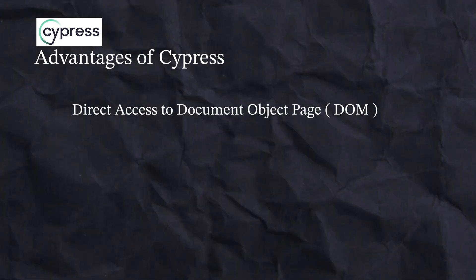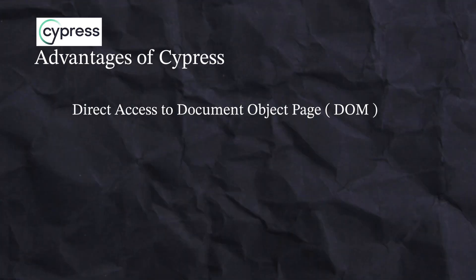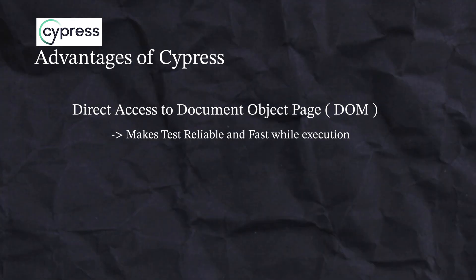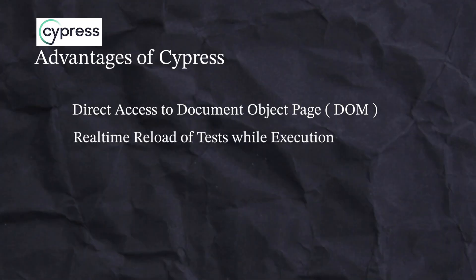The first advantage of Cypress is direct access to the DOM. Unlike other automation testing tools like Selenium, Cypress has direct access to DOM elements, which makes tests faster and more reliable because it is directly interacting with the DOM elements — something not available with other tools.